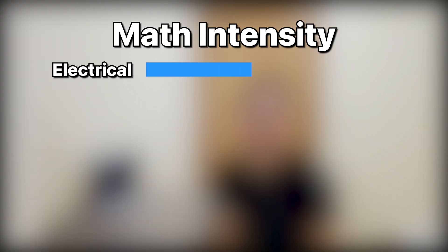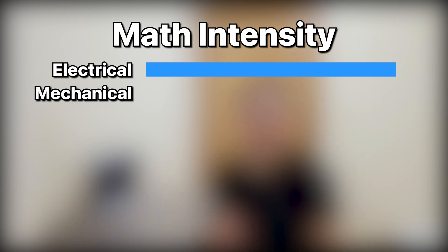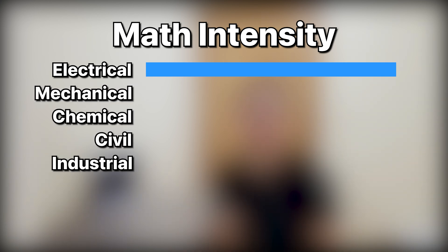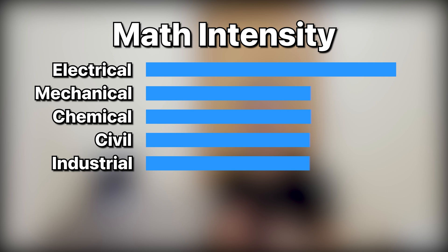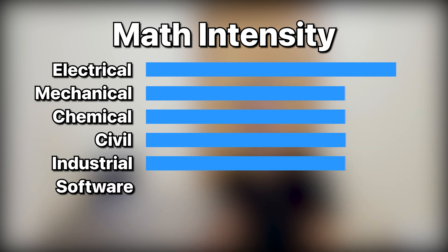Electrical engineers will most likely deal with the most math. Mechanical, chemical, civil, and industrial engineers are next and all use similar amounts of math. Software engineers tend to use the least amount of math and use Boolean logic the most. However, since each of these six types of engineering are very broad, please take this ranking with a grain of salt.